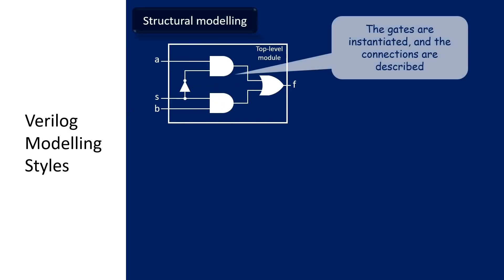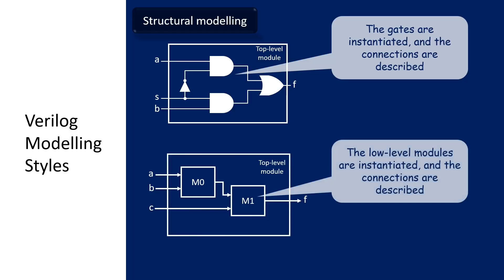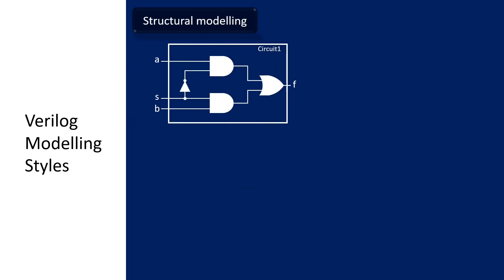For the structural modeling, we will model the circuit based on its structure where we will instantiate the gate and describe its connections. Also, we can instantiate other modules and describe the connection to create a new module.